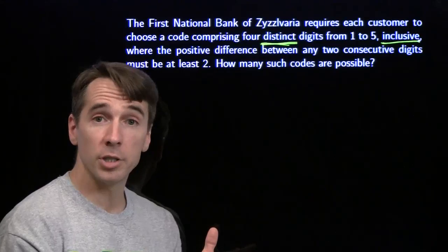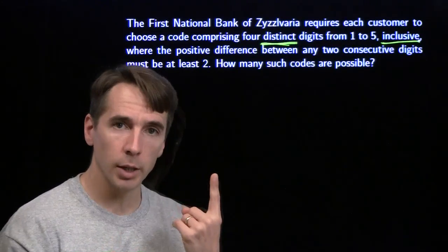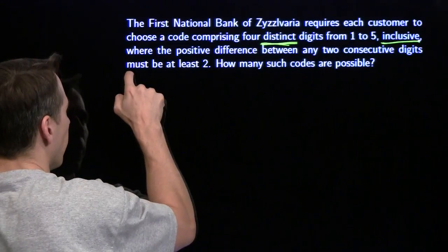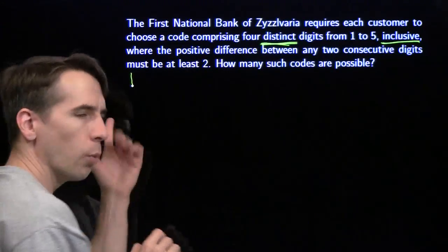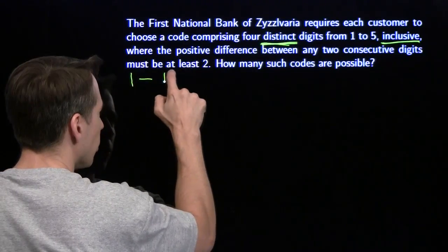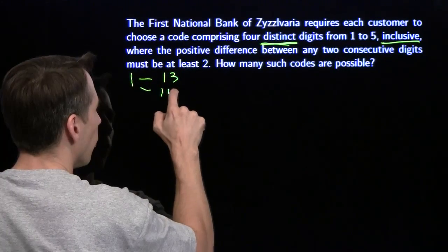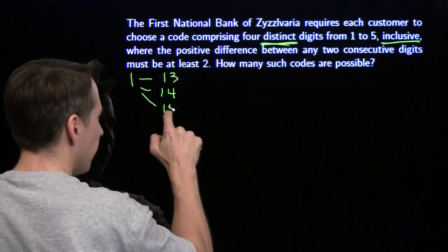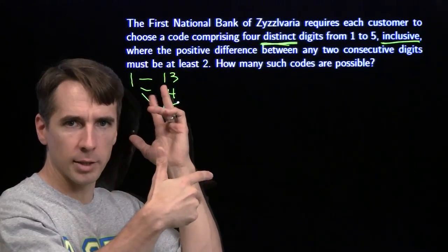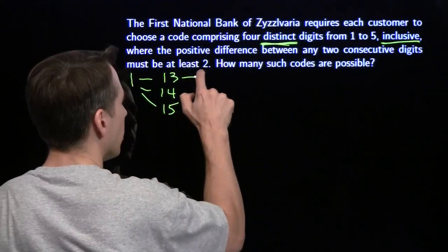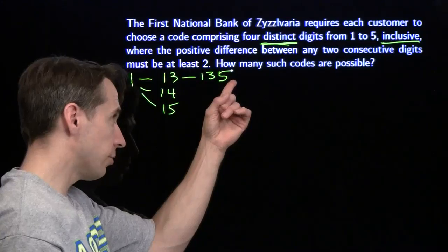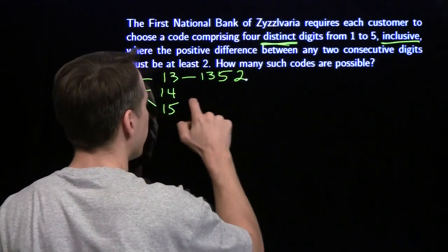We're going to get organized by the first digit — all the ones that start with one, then all the ones that start with two, and so on. Starting with one: we can't go one, two. We can go one, three; one, four; or one, five. If we start off one, three, we can't put a two or four next because it's too close to three — we have to go one, three, five. We can't put a four after that, but we can put a two, and those are the only two choices left: 1-3-5-2.